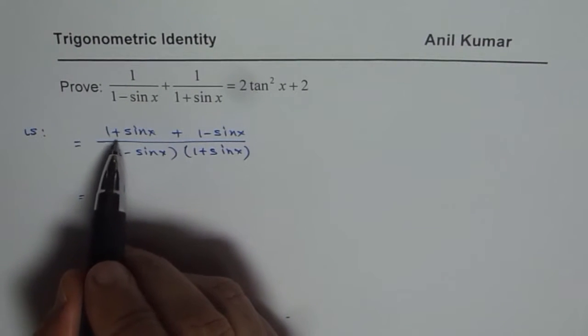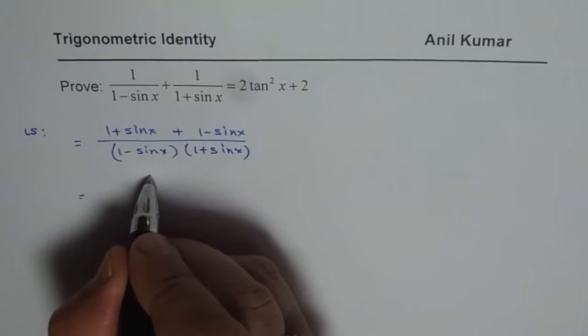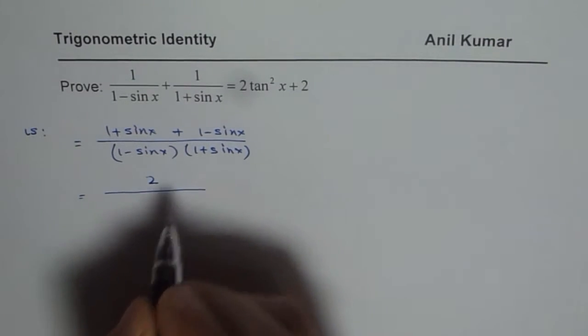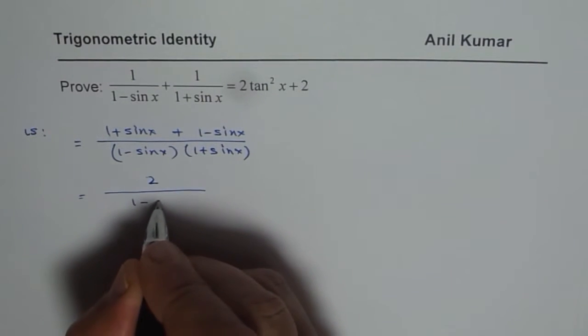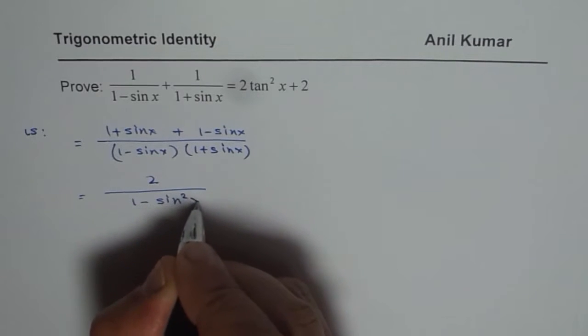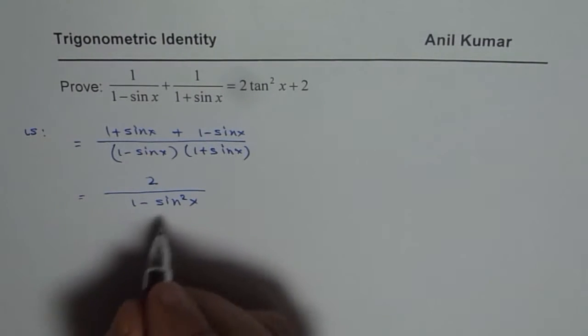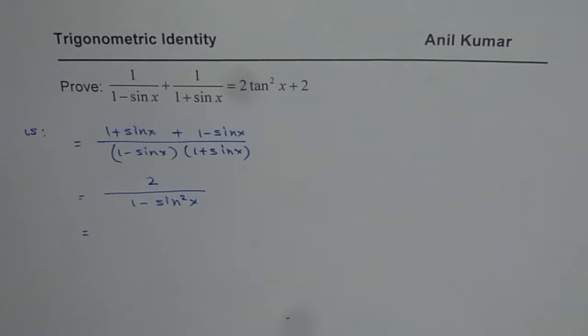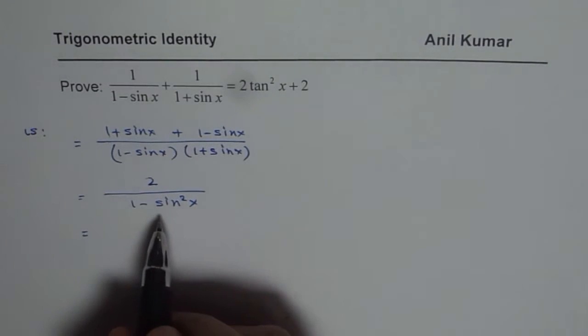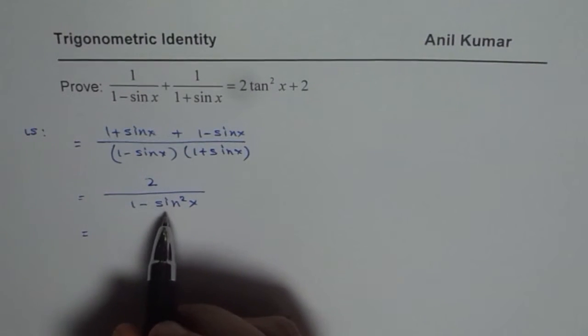Now we can simplify this. We get 1 plus 1 as 2. So we can write this as 2 over 1 minus sin square x. Now 1 minus sin square x is cos square x. So we get cos square x in the denominator.